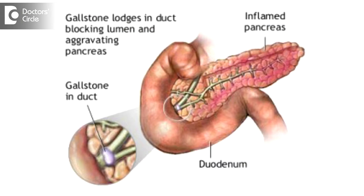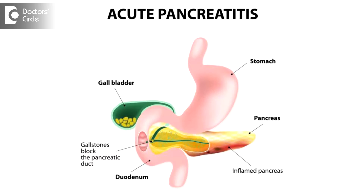To know about acute pancreatitis, first you should know what is the pancreas. The pancreas is a gland, an endocrine organ, which also produces digestive juices. It is attached to the intestinal part called the duodenum.